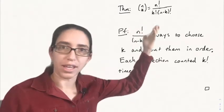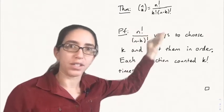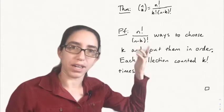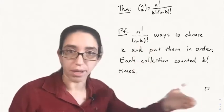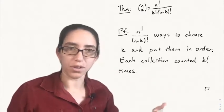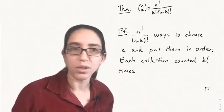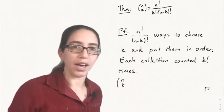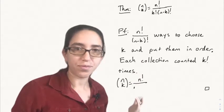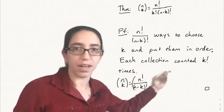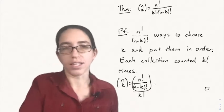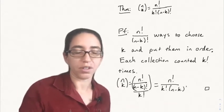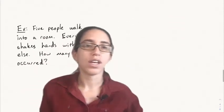This trick of dividing to get six for four choose two can be generalized to give the formula for a general N choose K. The theorem is: N choose K, the number of ways of choosing K things from N things, is N factorial divided by K factorial times N minus K factorial. The reasoning is that there are N factorial divided by N minus K factorial ways to choose K things and put them in order, but each collection of K things is counted K factorial times. We've overcounted by a factor of K factorial. So we divide by K factorial — just like we divided by two earlier, because two is two factorial — and we get N factorial over K factorial times N minus K factorial.